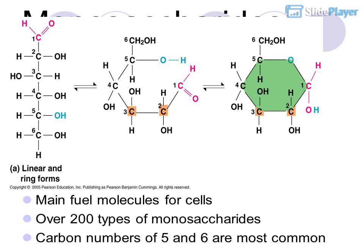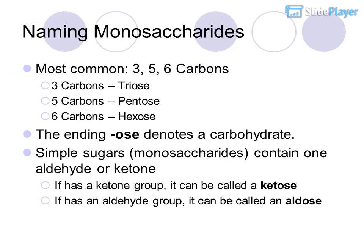There are over 200 types of monosaccharides, with carbon numbers of 5 and 6 being most common. Naming is based on carbon count: 3 carbons = triose, 5 carbons = pentose, 6 carbons = hexose. The ending '-ose' denotes a carbohydrate. Monosaccharides contain 1 aldehyde or ketone group. If it has a ketone group, it is called a ketose; if it has an aldehyde group, it is called an aldose.